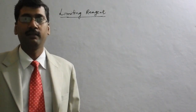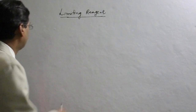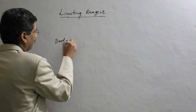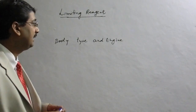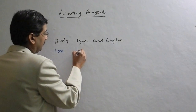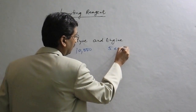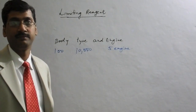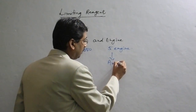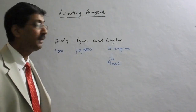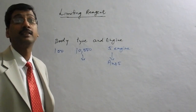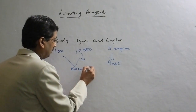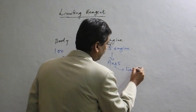First we have to understand what is the limiting reagent. Take an example: you are manufacturing a car, and each car needs 3 units — a body, tyres, and an engine. In your factory you make 100 bodies, 10,000 tyres, and 5 engines daily. How many cars will you produce? The answer is 5, because you only have 5 engines. 95 bodies and 9,980 tyres remain — those are the excess reagents. The engine is the limiting reagent.